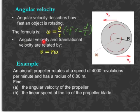Angular velocity and translational velocity are related to each other by this formula. v is the velocity along the length of the arc, and ω is angular velocity.